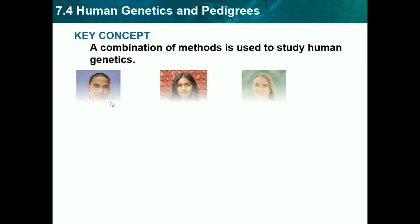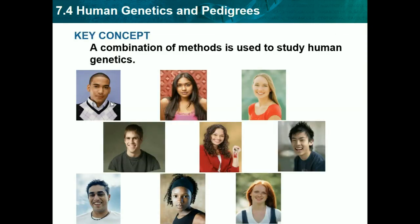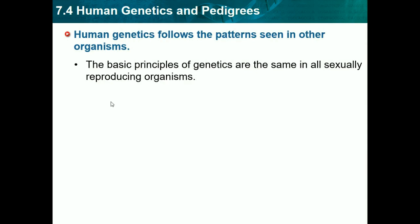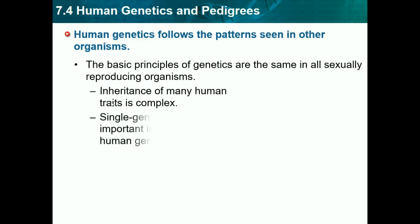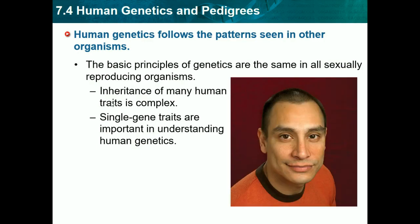Now we're on Section 7.4, Human Genetics and Pedigrees. A combination of methods is used to study human genetics. Human genetics follows the patterns seen in other organisms — the basic principles of genetics are the same in all sexually reproducing organisms, though inheritance of many human traits is complex. Single gene traits are important in understanding human genetics because they make it easier to find the basis of genetics.